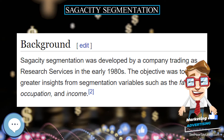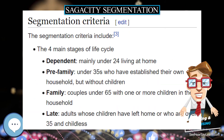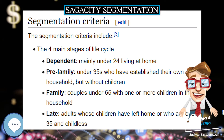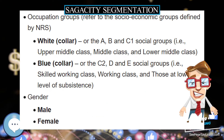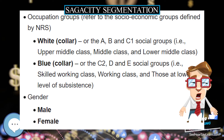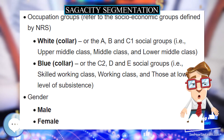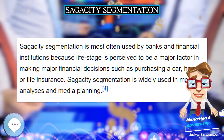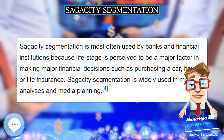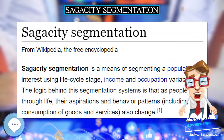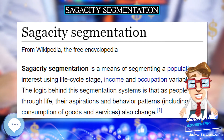Sagacity segmentation was developed by a company trading as Research Services in the early 1980s. The objective was to gain greater insights from segmentation variables such as family, occupation, and income. This approach to segmentation generates 24 groups of households.